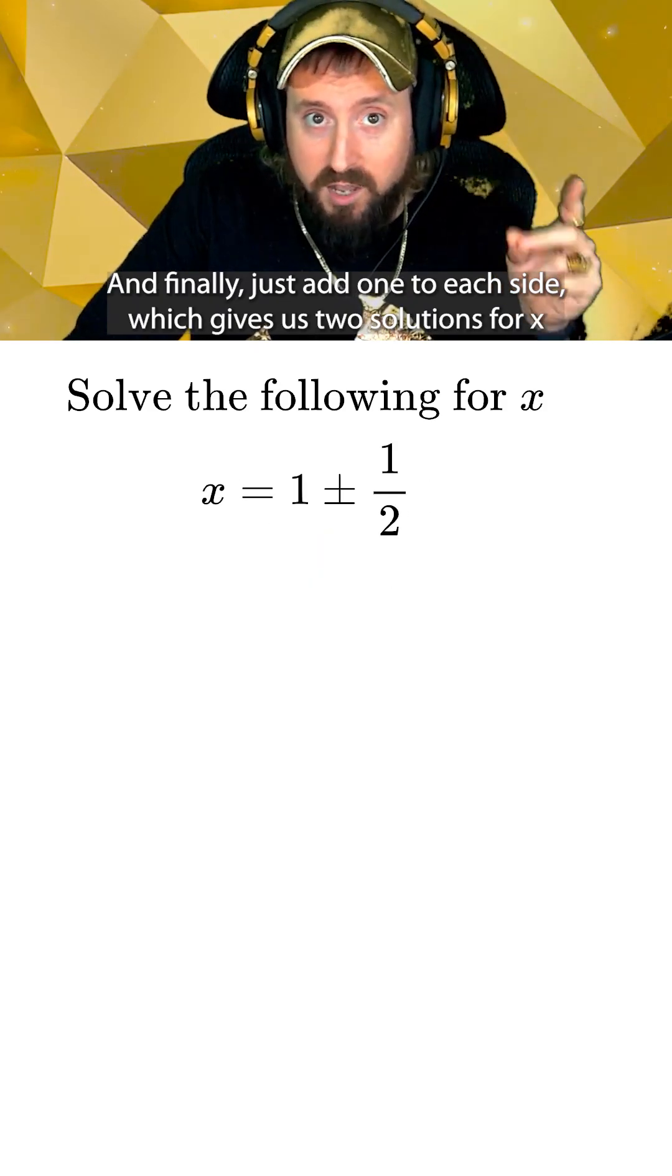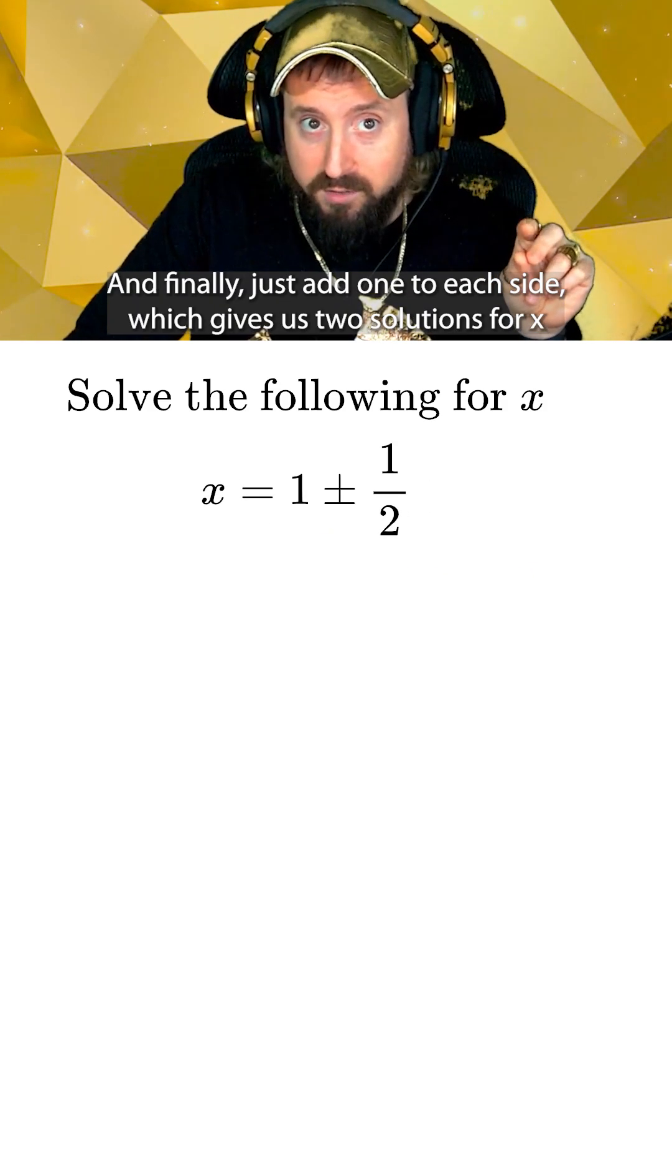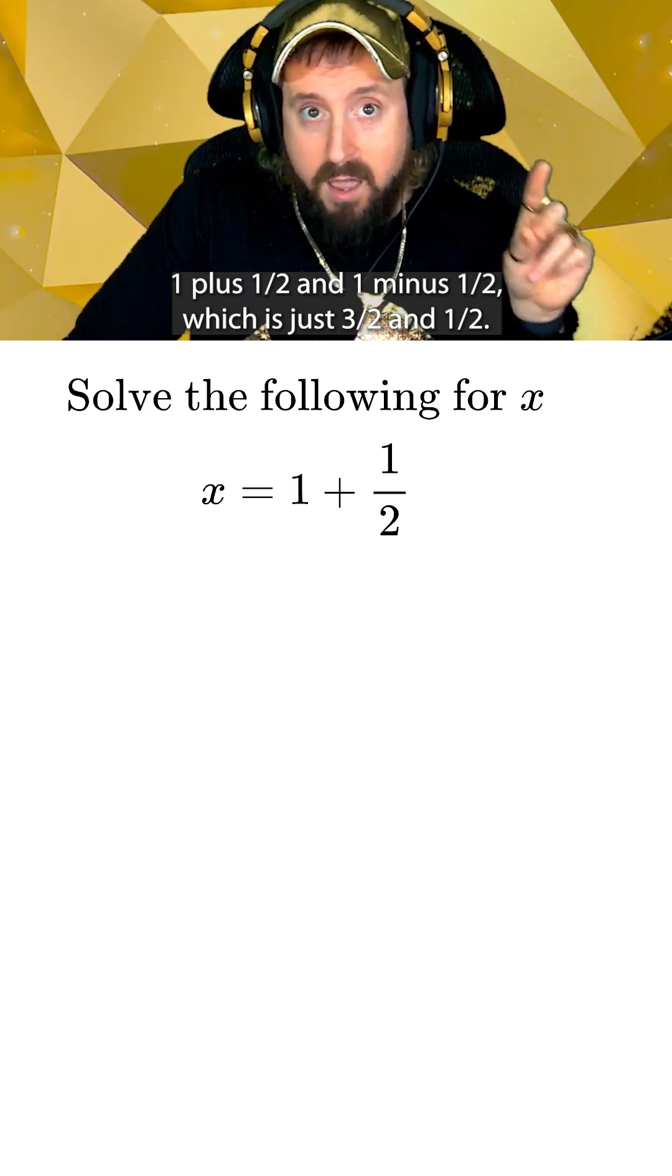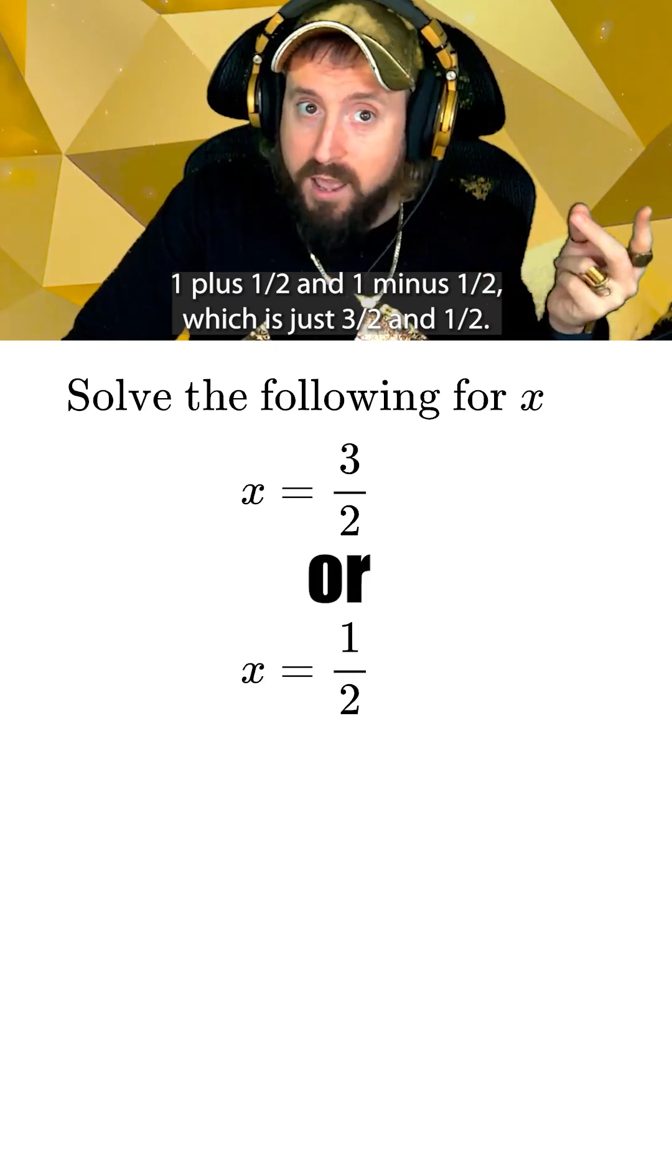And finally, just add 1 to each side, which gives us two solutions for x. 1 plus 1 half and 1 minus 1 half, which is just 3 halves and 1 half.